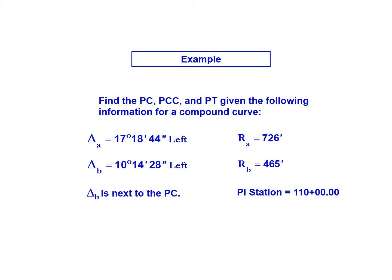We see that curve B has a smaller radius than curve A, so we should change the notation as we work this problem so that curve B uses a nomenclature of 2 and curve A uses the term 1 to denote those terms. We're also given the PI station of 110 plus 00.